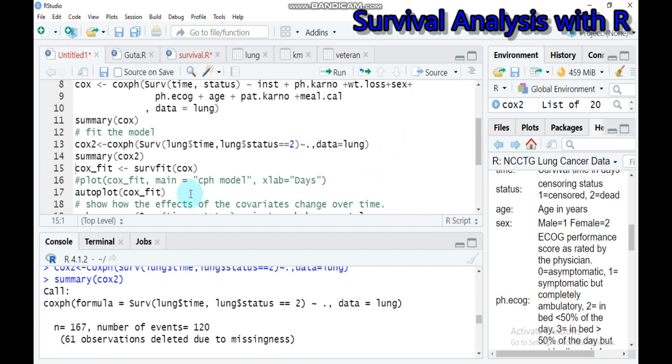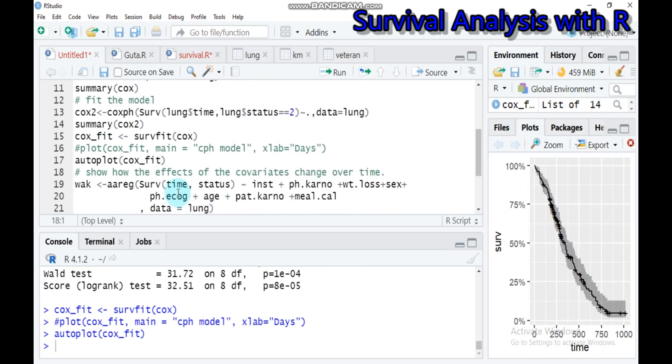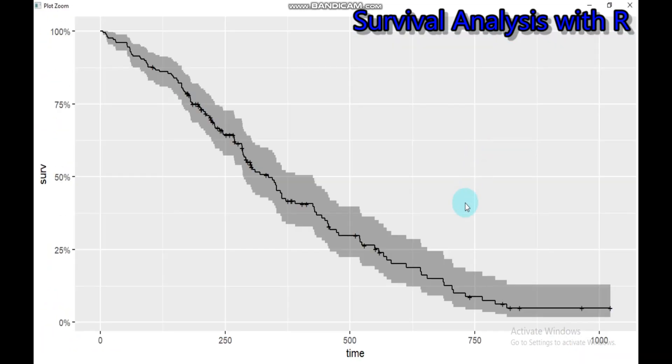You can also make a plot. In order to do that, you have to use the survfit function and then run. You will get the plot in this form. As the time increases from zero to one thousand days, the survival rate also decreases.